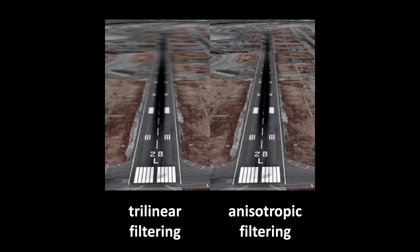Anisotropic filtering further improves upon MIP mapping to better render textures on surfaces angled relative to the camera. Here on the left, the portion of the runway further away from the camera appears muddy with trilinear filtering, but on the right, the same portion of the runway appears much clearer with anisotropic filtering. What's happening here is that the portion of the texture represented by each square area in the rendered surface should actually be trapezoidal in shape, not square.